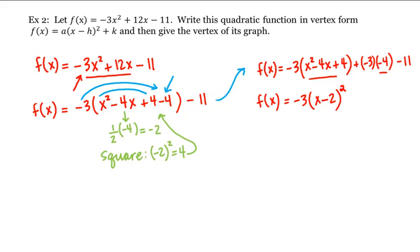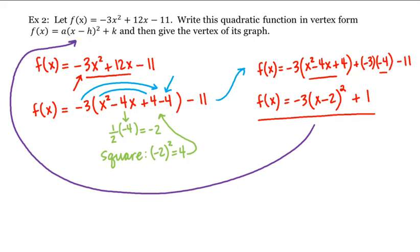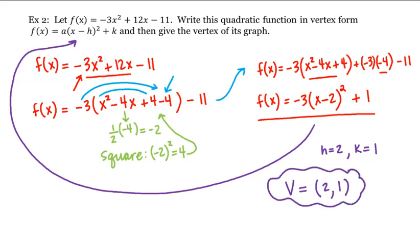This gives us f(x) = -3(x - 2)² + 1, and our equation is now in vertex form. Comparing to the standard vertex form, we see h = 2 and k = 1, which means our vertex is at (2, 1). This is how we convert a quadratic function from standard form to vertex form. Thank you and we'll see you next time.